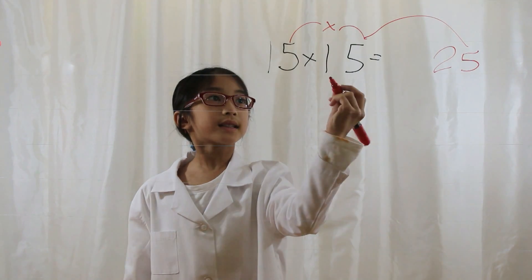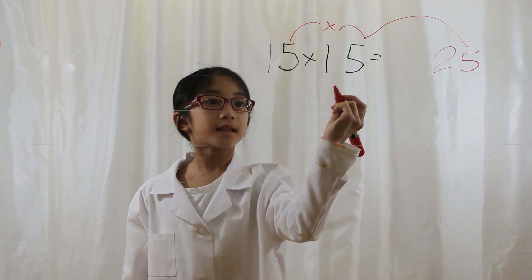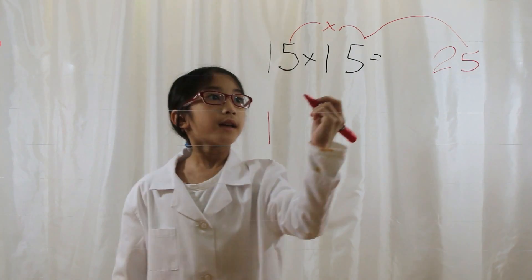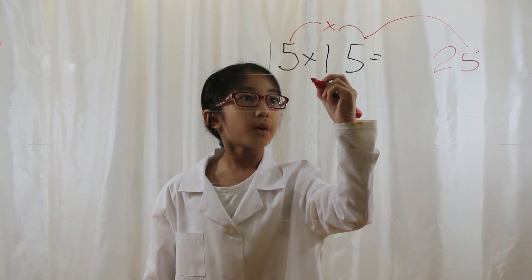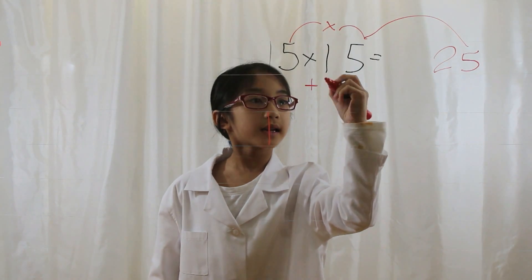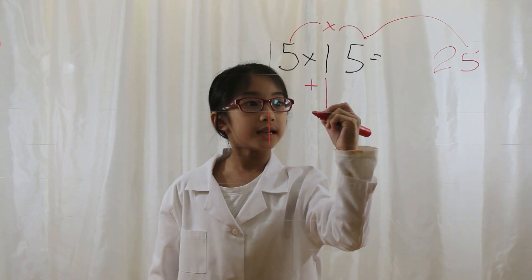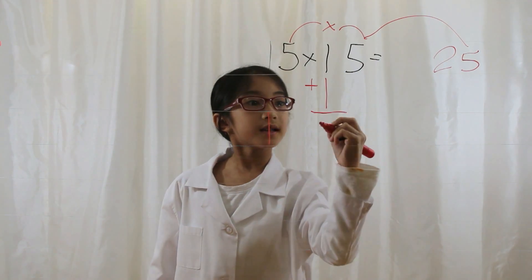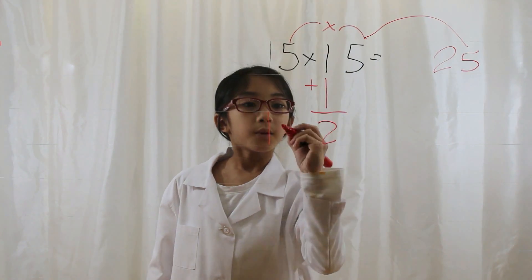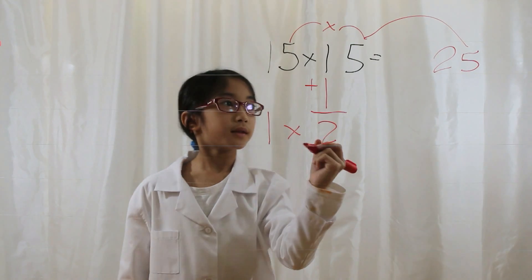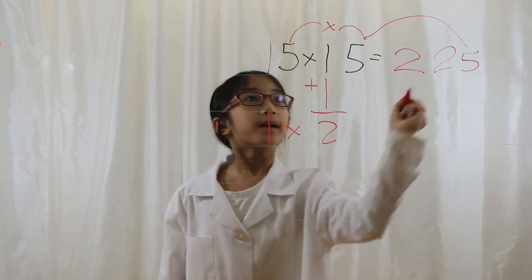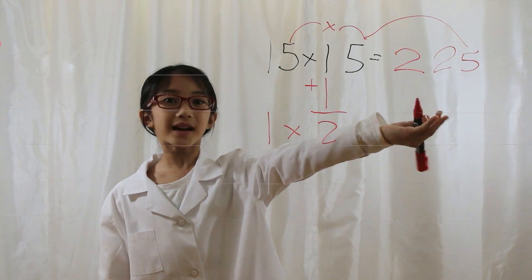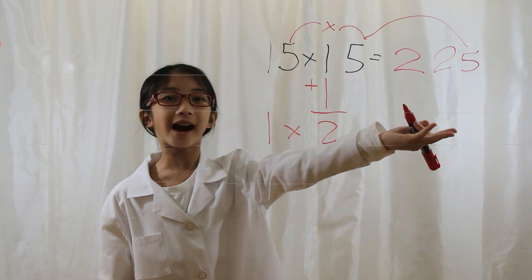Then you look at the tens digits. You bring the first tens digit down, and then you add a 1 to the second tens digit. 1 plus 1 is 2. 1 times 2 is 2. You bring the 2 up. 15 times 15 is 225.